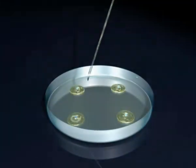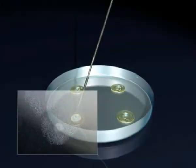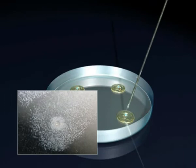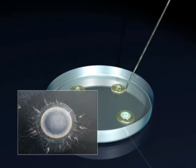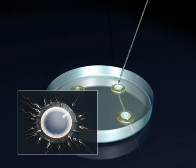In in vitro fertilization, a micro-droplet of concentrated sperm is added to each of the wells containing the oocytes.